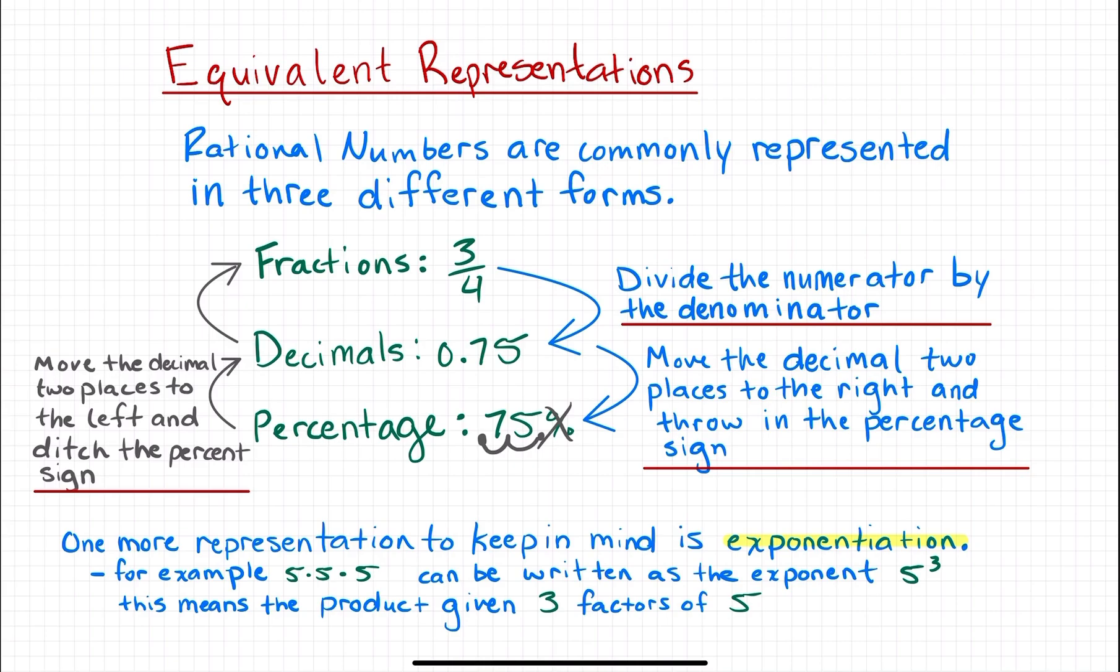We'll discuss how to convert from a decimal to a fraction shortly. But first, I want to discuss one more representation: exponentiation. For example, 5 times 5 times 5 can be written as 5 to the power of 3. This means the product when you have the factor 5 three times.